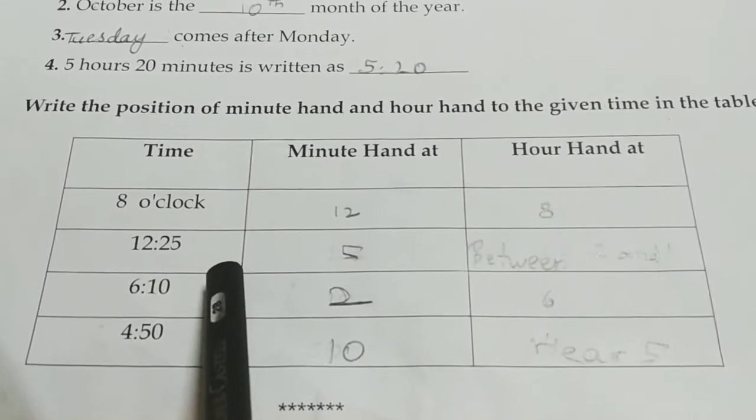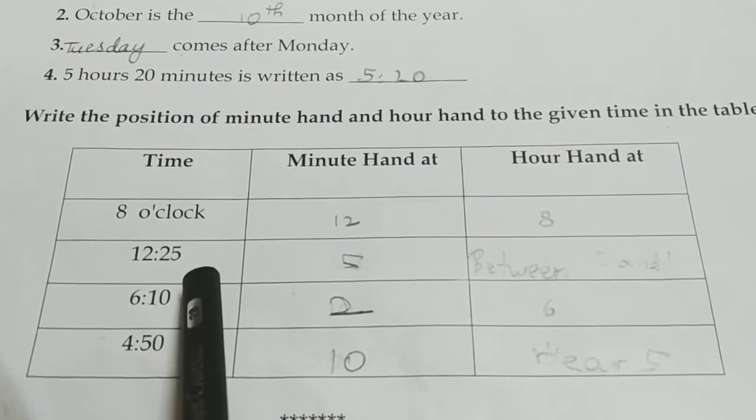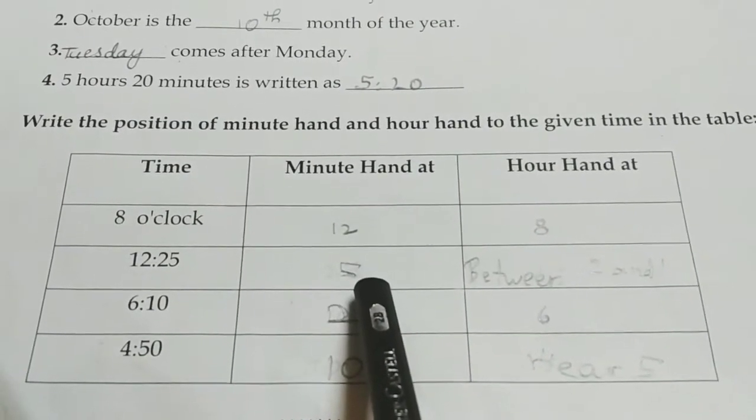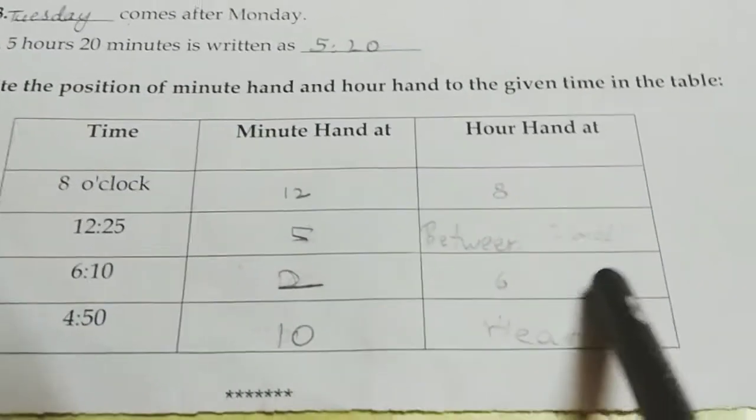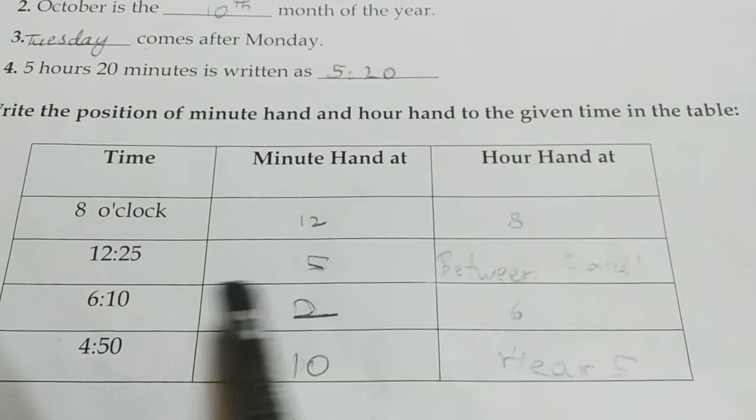12.25. 12.25 means minute hand should be at 5. And then hour hand should be between 12 and 1. It should be between 12 and 1.